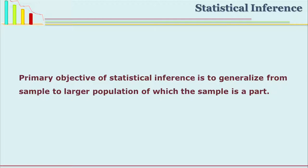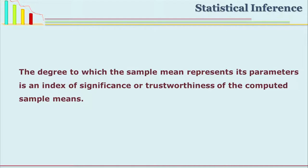We must understand both concepts because when we infer, we must know how, why, and what the implications of that inference are. The primary objective of research is to infer about the population from the sample, which is a part of that population. We take a small representative part, work on that sample, and then say if the sample is showing this, the population also must be showing this. The degree to which your sample mean is representative of your population mean shows its trustworthiness and significance.